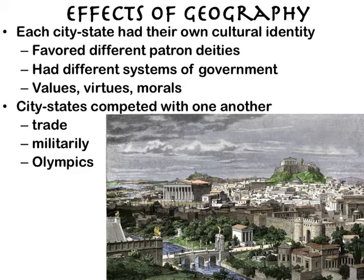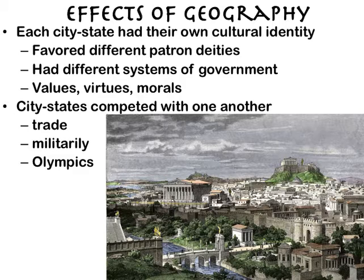Their gods and goddesses were a group called the Olympians — many different gods and goddesses each in charge of different areas of the universe. Depending on the values of their city-state, each had a different patron god. For Athenians, who really valued wisdom and learning, it makes sense that Athena — their city is named after her — is their patron goddess, since she's the goddess of wisdom. For the Spartans, who were very warlike, their patron god is Ares, the god of war. They all believed in the same gods but had different patron ones.